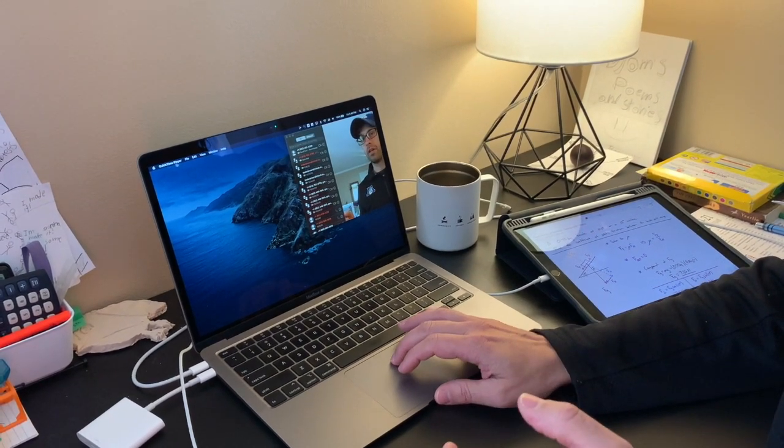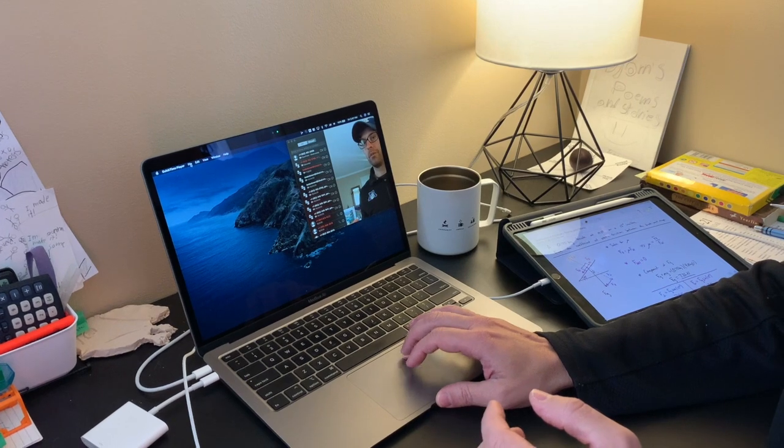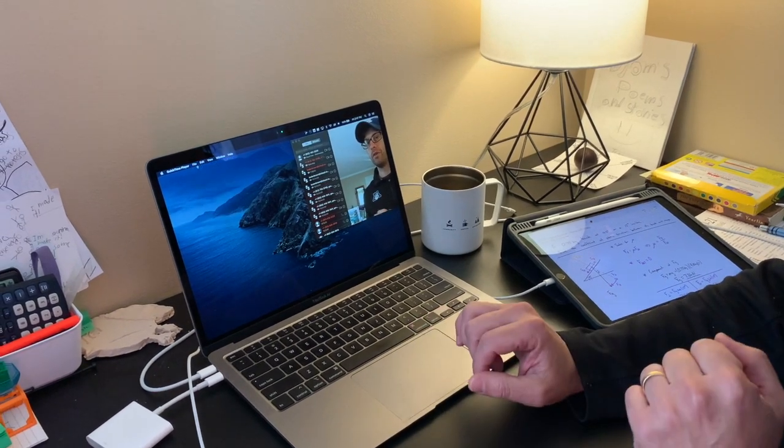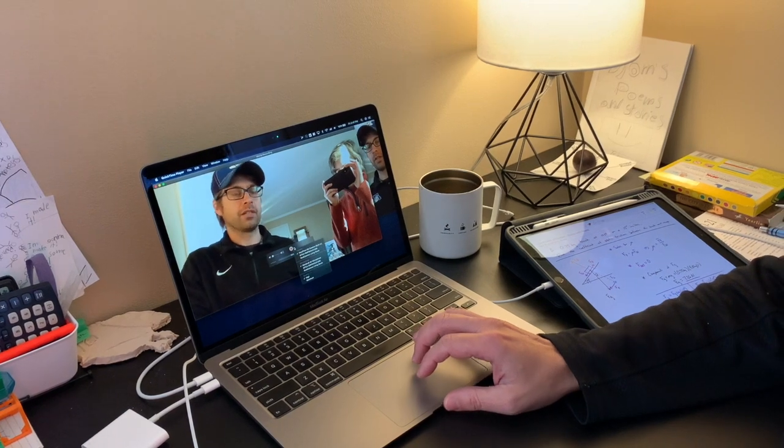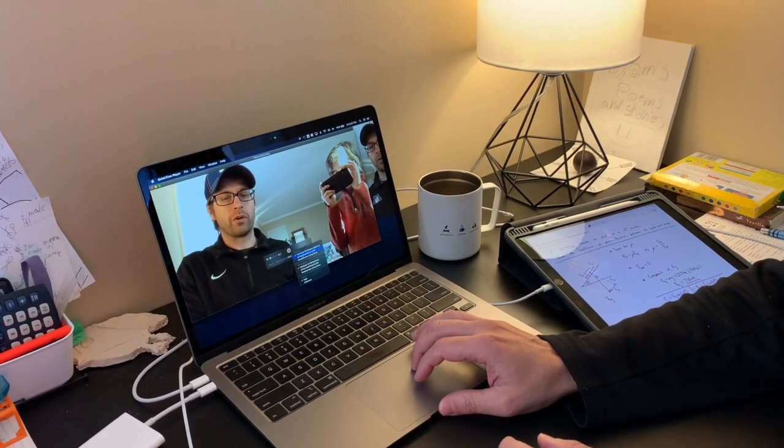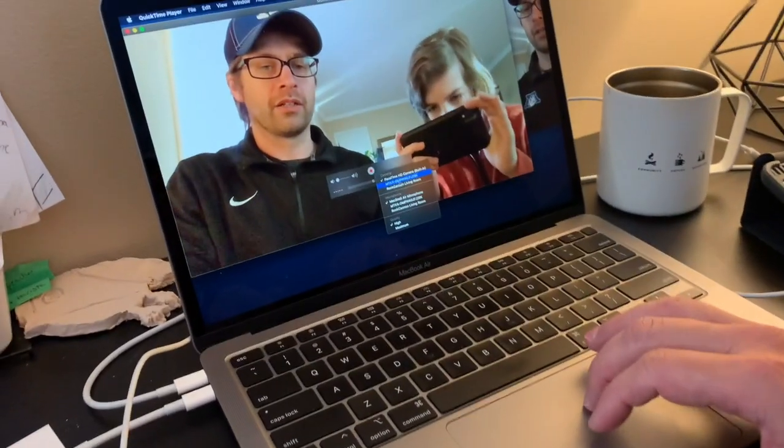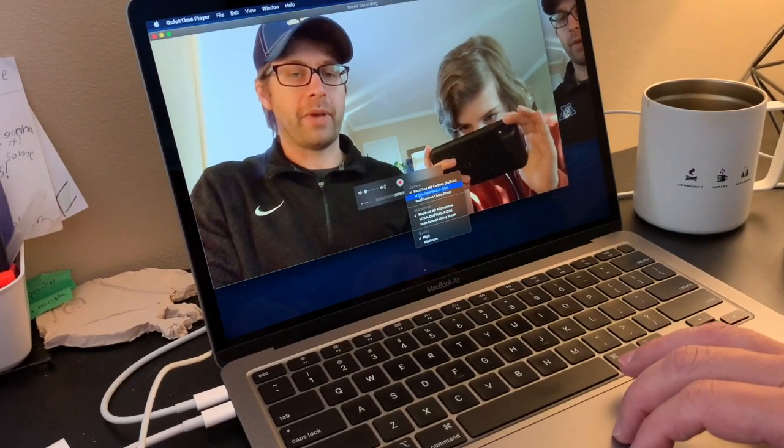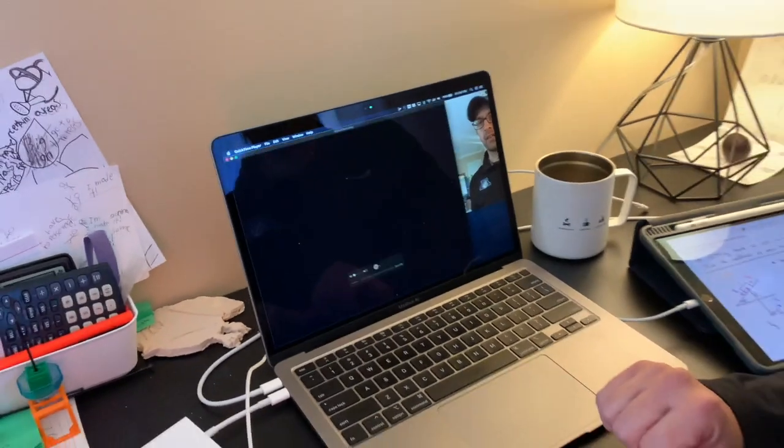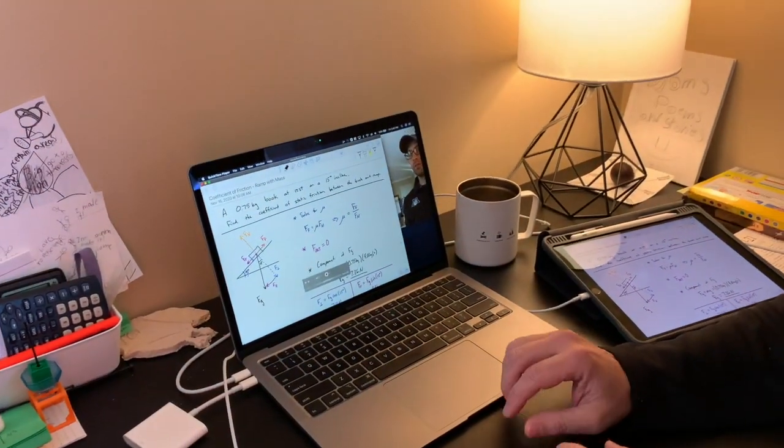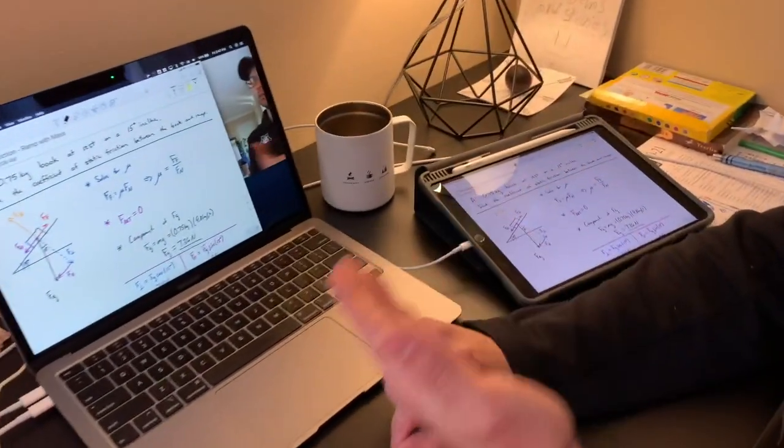Once QuickTime is running, you'll see it running at the top of the menu bar. Click File and New Movie Recording. From here, we're going to choose the input of the movie recording to be your iPad. So if you look for the iPad name as the camera option, then choose that, and now it will display what's on your iPad screen on your computer.